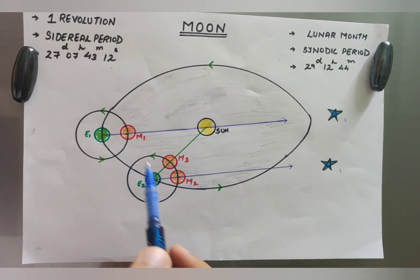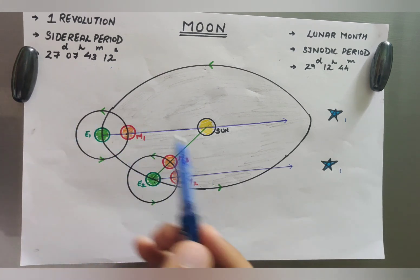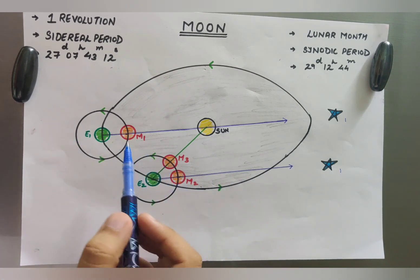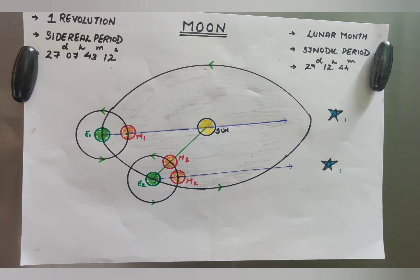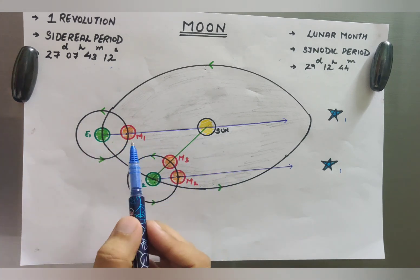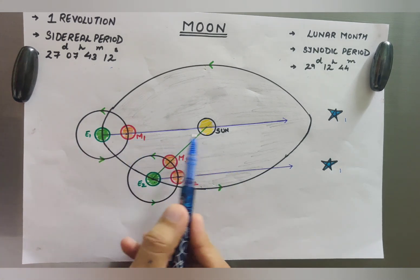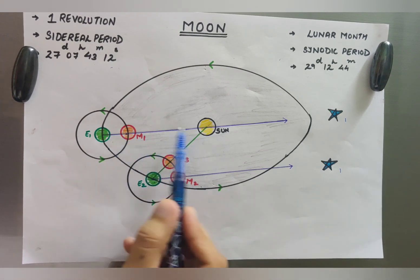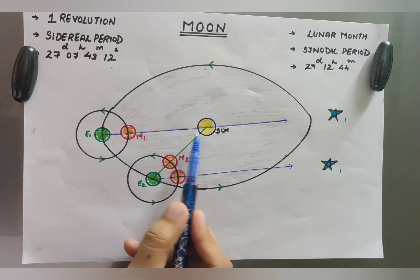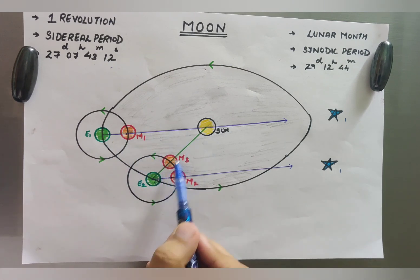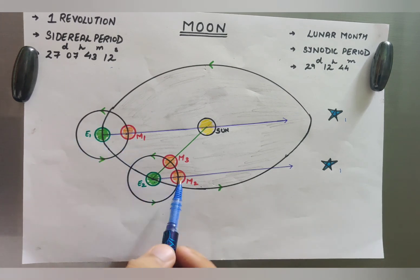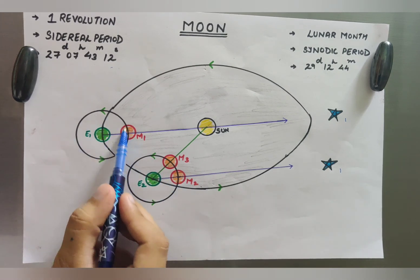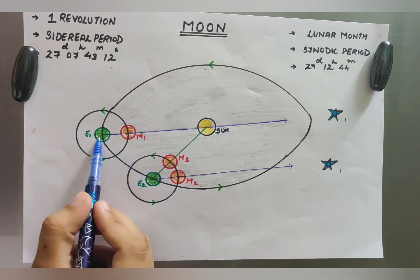Now we go to the next topic — the synodic period. What is the synodic period? The synodic period, or lunar month, or lunation as we call it, is basically the time between two consecutive new moons or full moons. First of all, let me talk about new moon briefly. What is the new moon? A new moon is the position where moon and sun are in conjunction and in the same line. So now in this position, M1 moon is going around the earth.